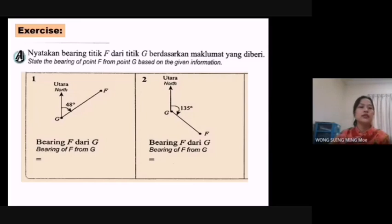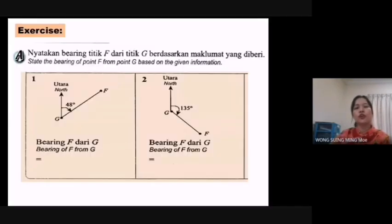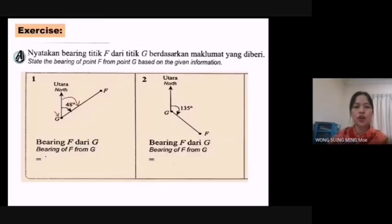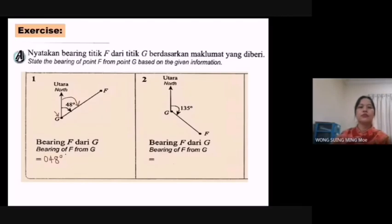Now, state the bearing of point F from point G based on the given information. Remember: the angle is measured from the north to the line, and the bearing is written in three-digit form. So you must add a zero at the front: 048°. Question number two: bearing of F from G.